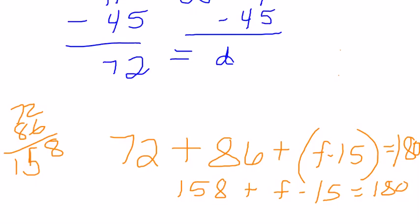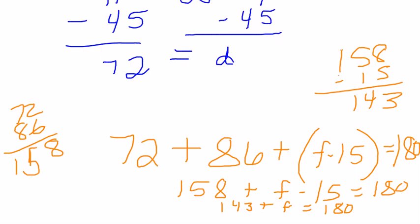I know that 158 minus 15 is 143. So 143 plus F equals 180. All I have to do is subtract 143 from both sides. So 180 minus 143 is 37. F equals 37 degrees.